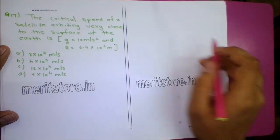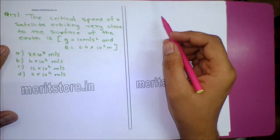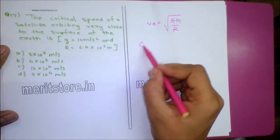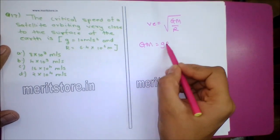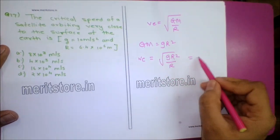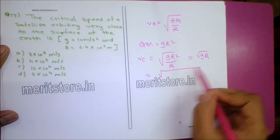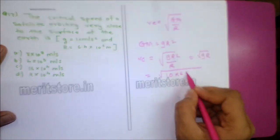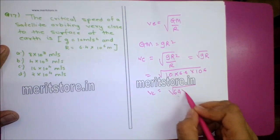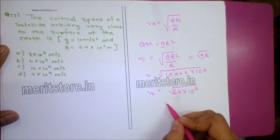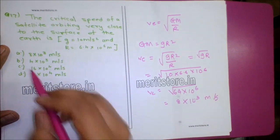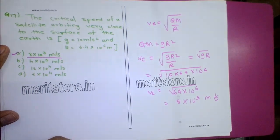Question 17: The critical speed of a satellite orbiting very close to the surface of the Earth. Vc = √(GM/R), and since GM = gR², Vc = √(gR²/R) = √(gR) = √(10 × 6.4 × 10⁶) = √(64 × 10⁶) = 8 × 10³ m/s. Option A is the correct answer.